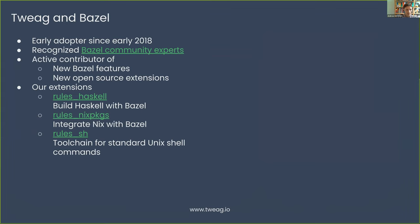Twig has been an early adopter of Bazel since early 2018. We're recognized as a Bazel community expert by Google and we've been active contributors of new Bazel features and open source Bazel extensions. Our extensions include: rules_haskell, a Bazel rule set to build Haskell code; rules_nixpkgs, which allows integrating the Nix package manager with Bazel so you can provision system dependencies from Nix and import those derivations into Bazel for a fully hermetic reproducible setup; and rules_sh, a smaller rule set that allows defining a toolchain for standard Unix shell commands like find, cat, sed.